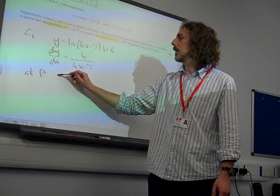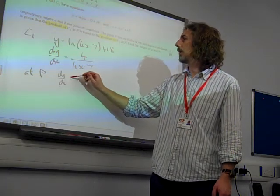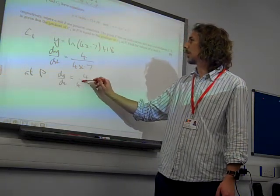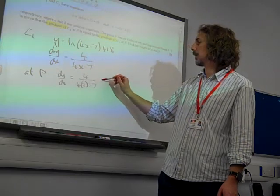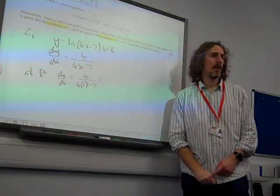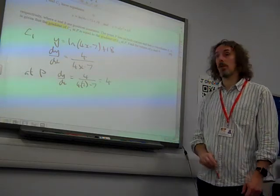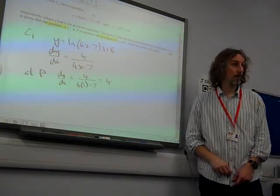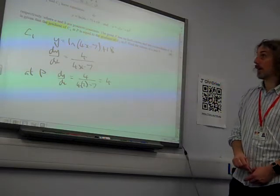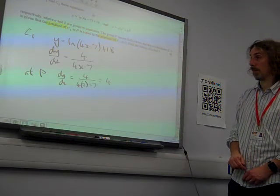So at P, dy by dx of C1 is 4 over 4 times 2 minus 7. That is 4 divided by 8 take away 7, so 4 divided by 1. OK. That's enough for now on C1.